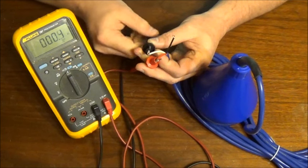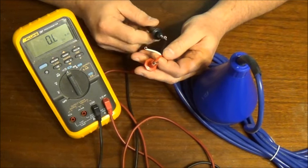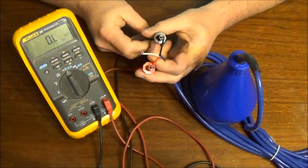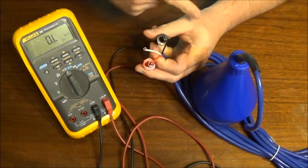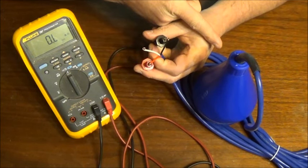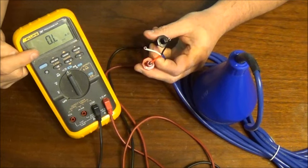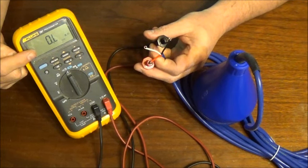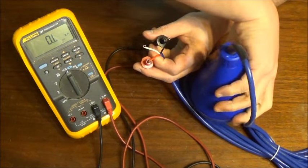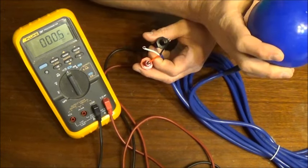Now if we leave our lead on the red conductor and move to the black, we should see just the opposite. Float is in the upright position, the meter is reading an open condition.